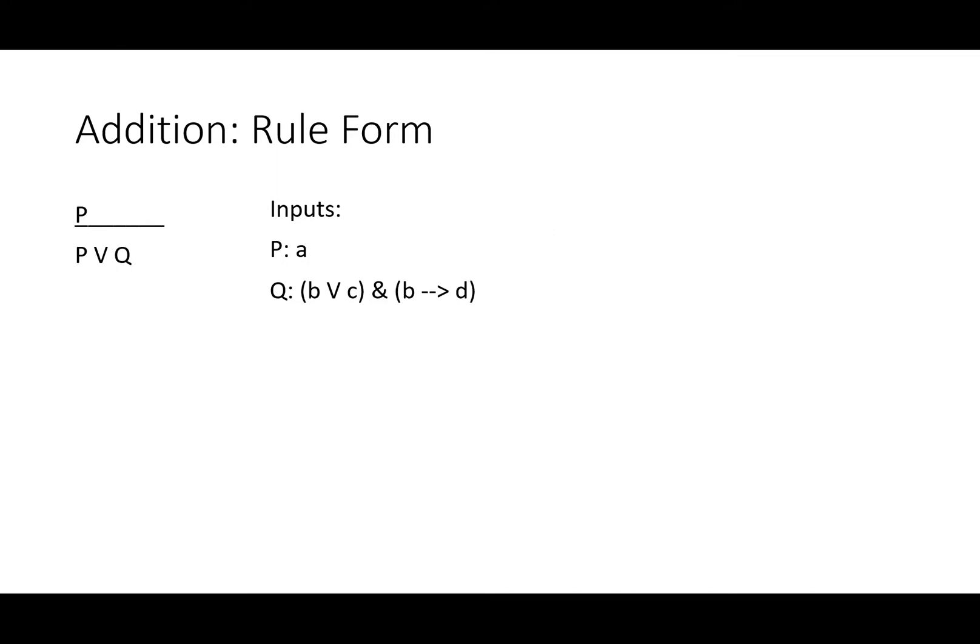Addition gets more interesting when we make Q something more interesting. So let's plug in A for P and either B or C, and if B then D for Q. Well, that gives us the output: A, therefore either A or either B or C, and if B then D. You can add literally anything using addition because we know that A is true. It's one of the premises. A or even some long sentence that we have no other information about is true.